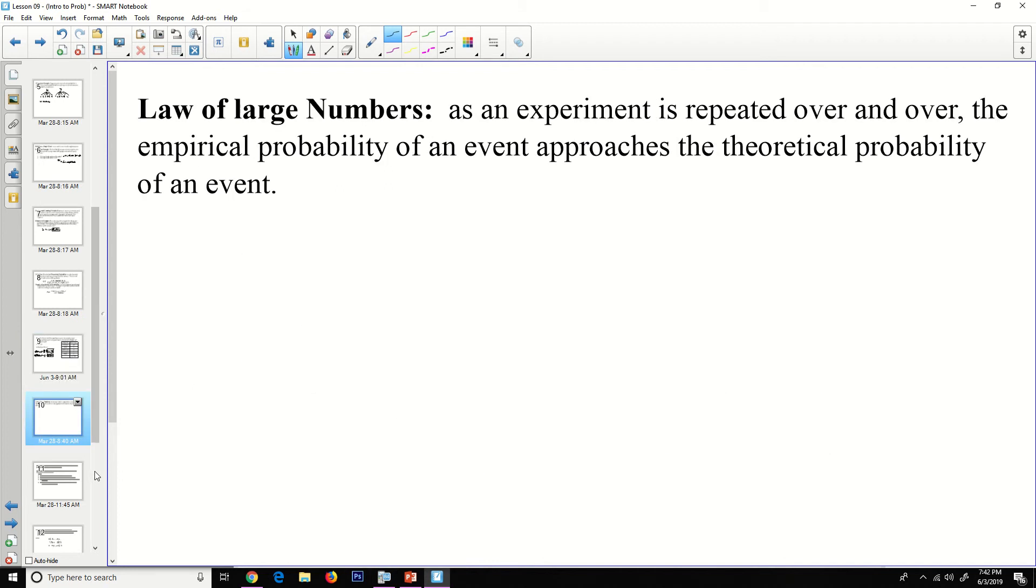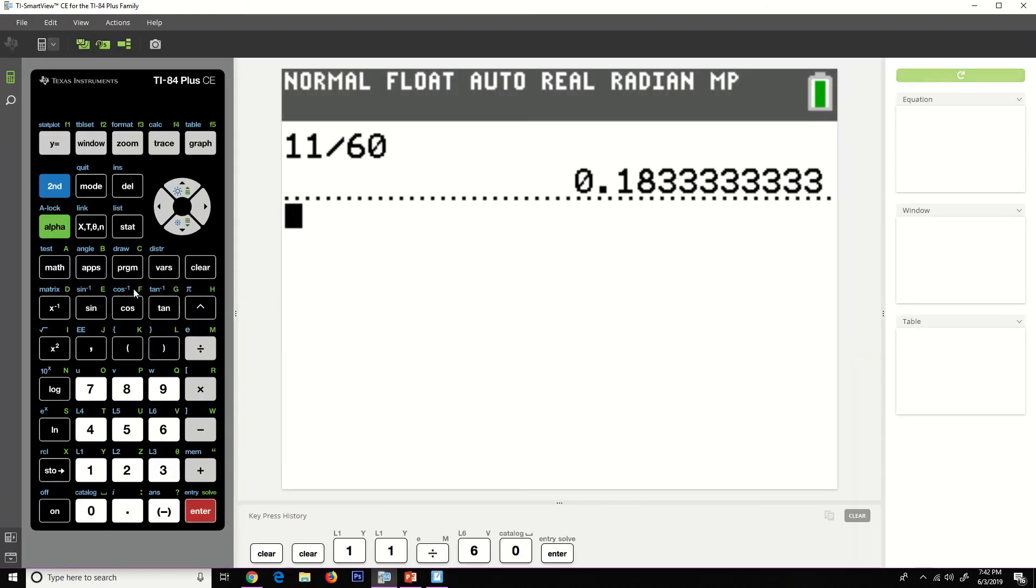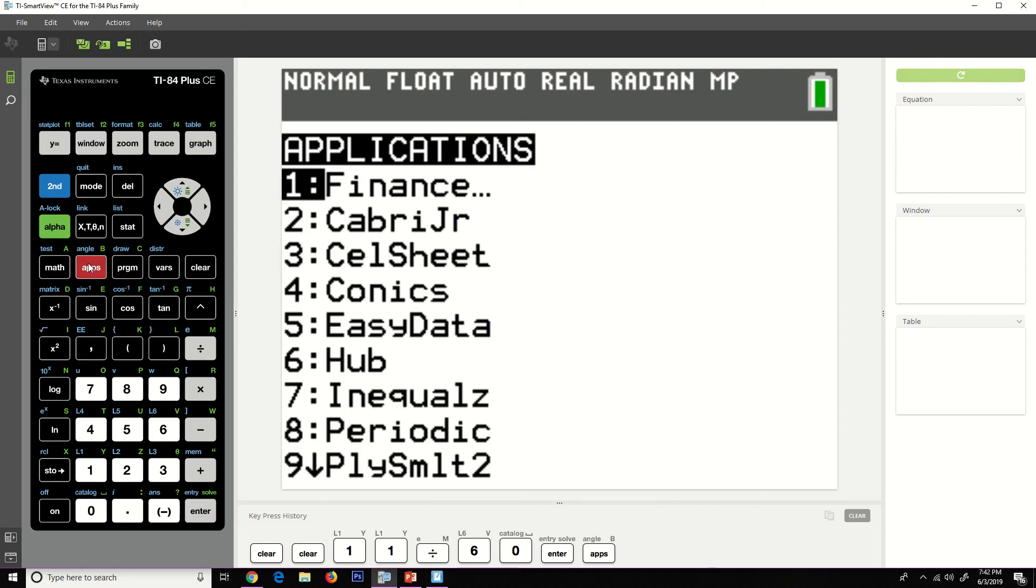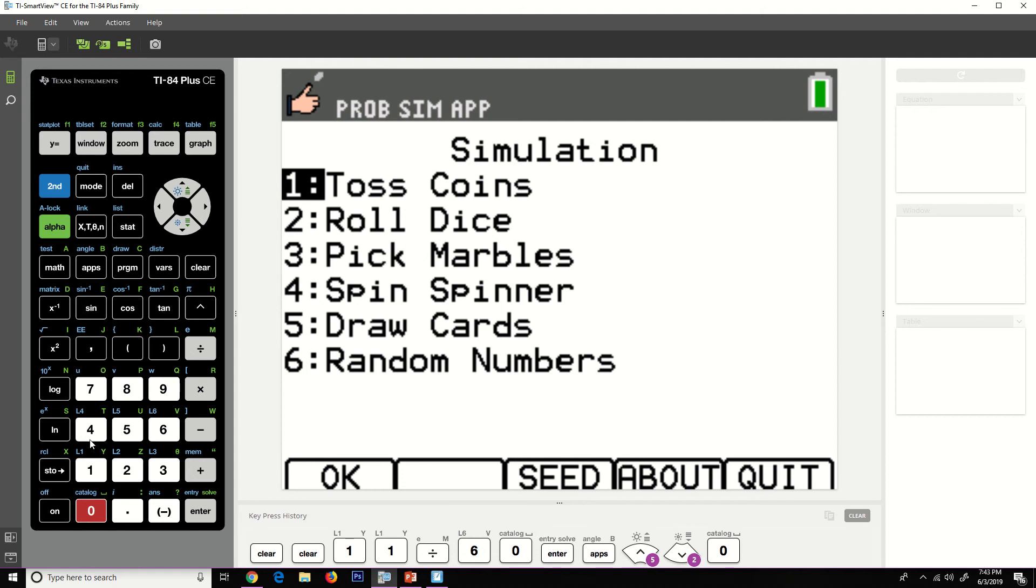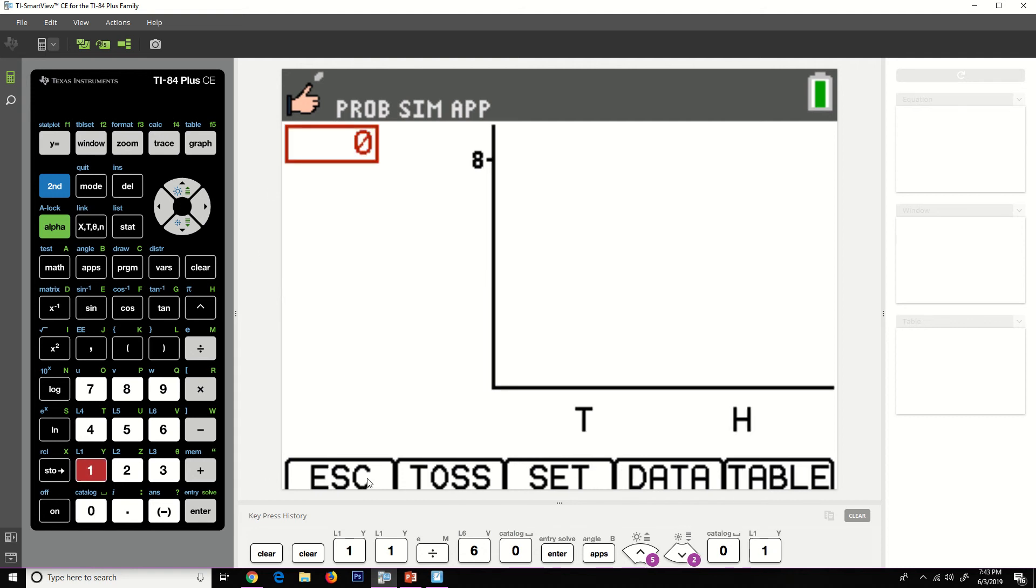Law of large numbers: as an experiment is repeated over and over, the empirical probability of an event approaches the theoretical probability of an event. I'm going to go using data probability simulation. Coin toss. So it says toss set data table. And so if I hit my window button here, it's going to toss.